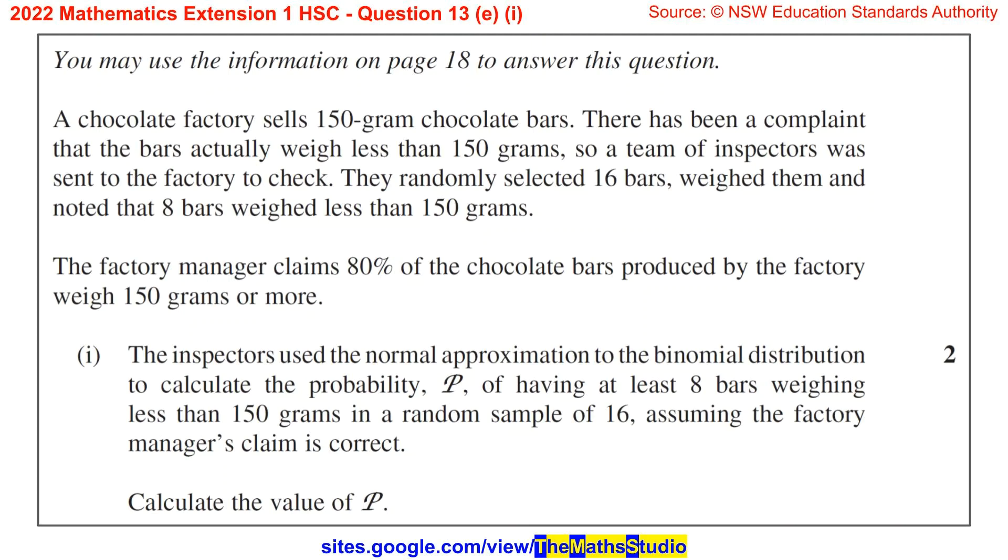Part 1. The inspectors used the normal approximation to the binomial distribution to calculate the probability P of having at least 8 bars weighing less than 150 grams in a random sample of 16, assuming the factory manager's claim is correct. Calculate the value of P.